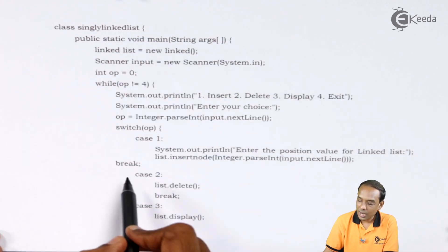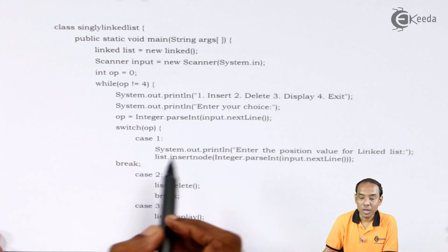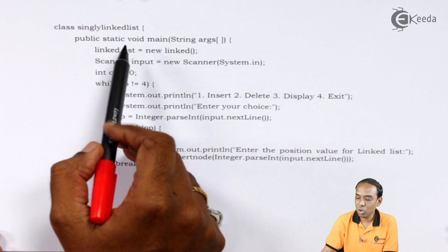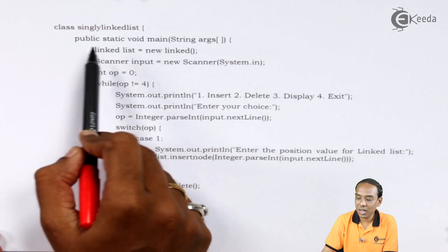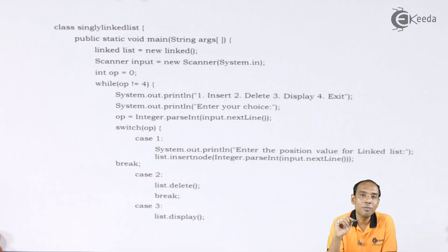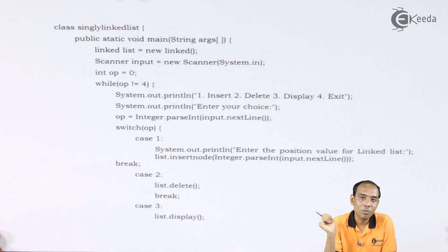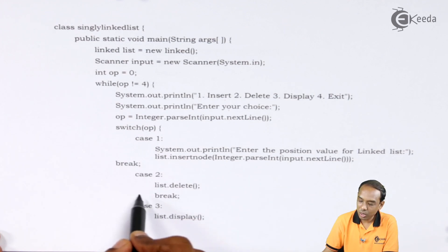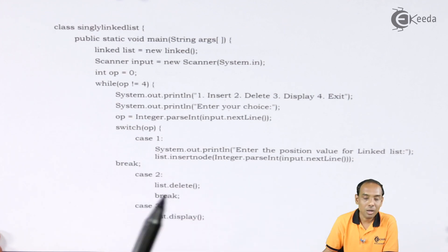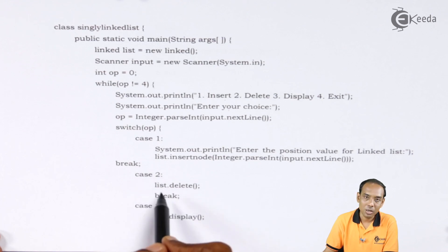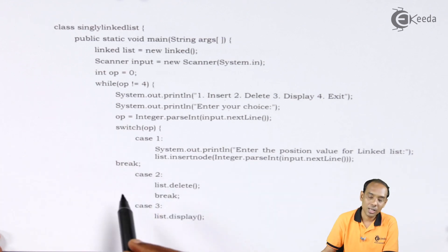Now we move to case number two. Case number two is for deletion. I write down list dot delete — list being the object of the linked list class — which will delete the particular node the user wants to delete. Once this is done I call the break statement to exit that case. So I write down: case 2, list dot delete, break. It will then come out of that particular case.